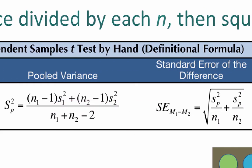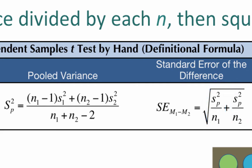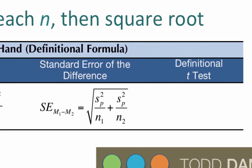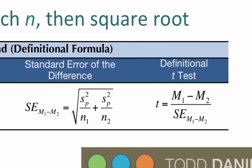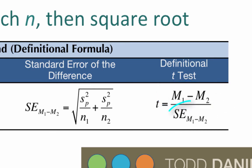The pooled variance is then divided by each sample size, those are added, and then you take the square root of the sum — that is the standard error of the difference. Finally, the t-test is calculated by subtracting the mean of the second sample from the mean of the first sample — that's the mean difference — and then dividing the mean difference by the standard error of the difference.